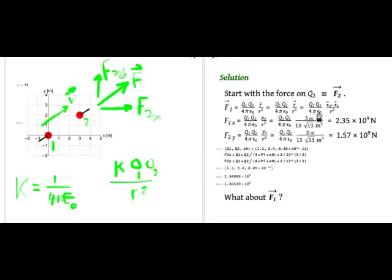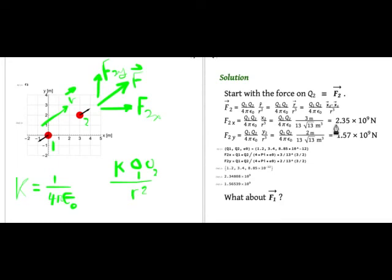Since x1 vector is 0, x2 is 3 meters. And R? Looking at this right triangle, the x part is 3 and the y part is 2, so the distance is the square root of 3² + 2² = √13. Then R cubed is √13 cubed, which is 13 times √13, in meters cubed. Plugging in q1 and q2 gives 2.35 × 10⁹ newtons. That's a force, so the unit should be newtons.